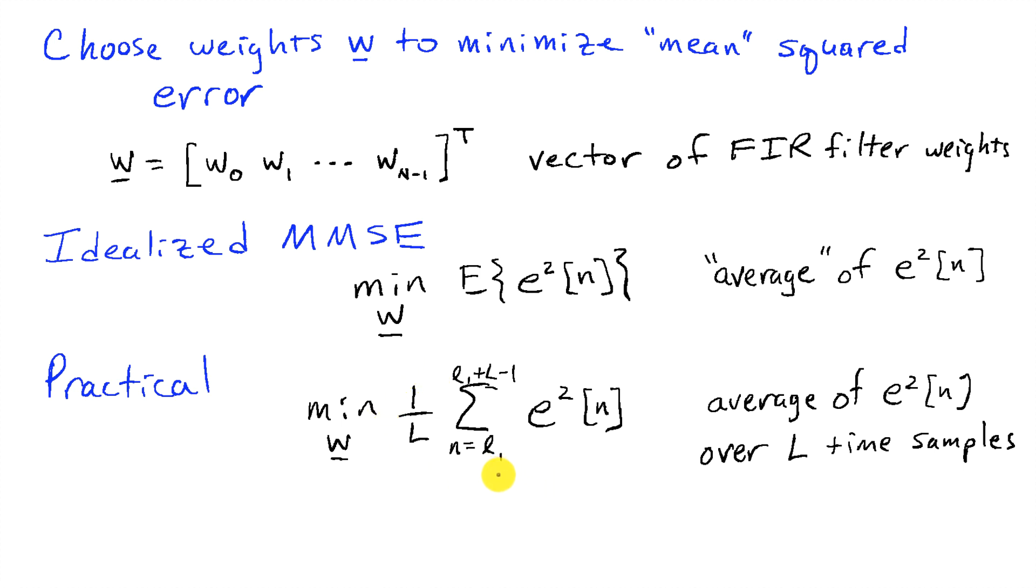And so we're going to approximate this mean squared error with a sum. And so we're going to take some section of data that's capital L samples long, say from time n equals little L1 to L1 plus capital L minus 1. And we're going to try to find w that minimizes the average squared error over those capital L time samples.